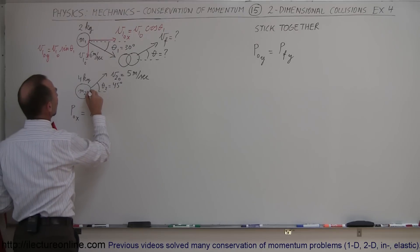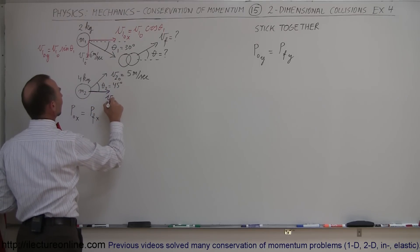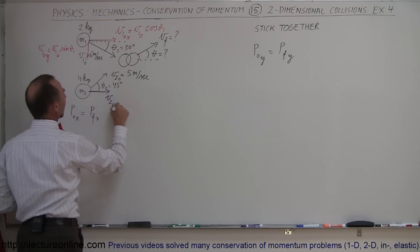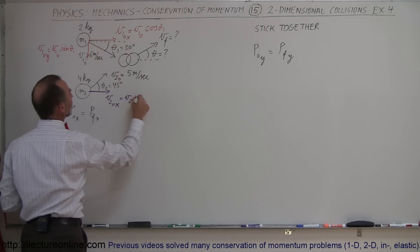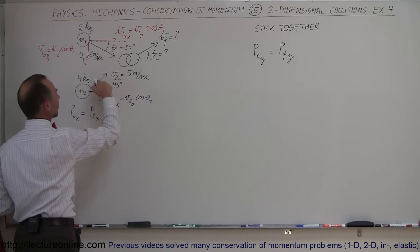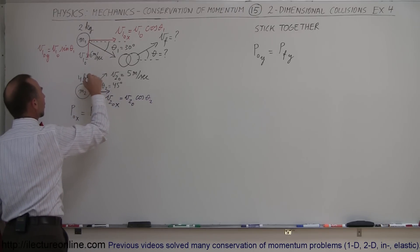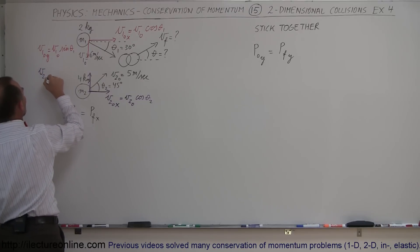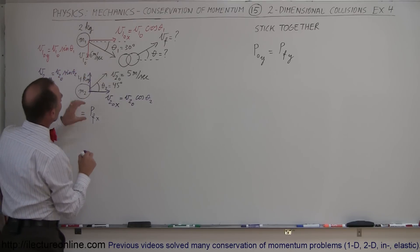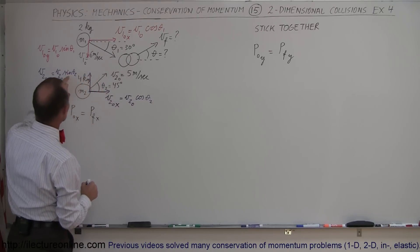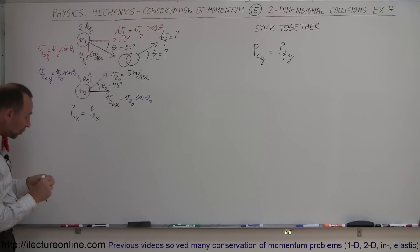For M2: v2 initial in the x direction equals v2 initial times cosine of theta2 — that's the adjacent side. The y component, v2 initial in the y direction, equals v2 initial times sine of theta2, since it's the opposite side of the triangle. Now we have the x and y components of the initial velocity for each of the two objects.